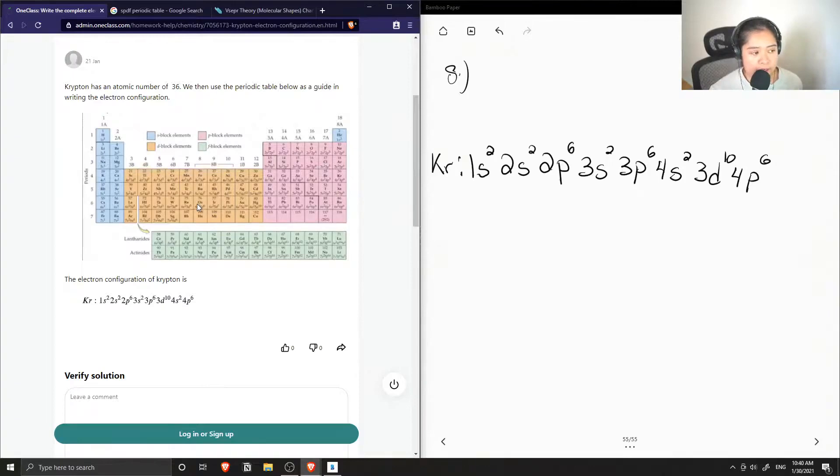especially when we have to remove electrons or add electrons, because for example, if we had like copper plus and removed an electron, we wouldn't remove an electron from the 3d10 orbital, we would remove it from the 4s1 orbital. So you just have to kind of be careful in writing the orders of your electron configuration.